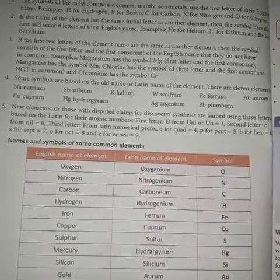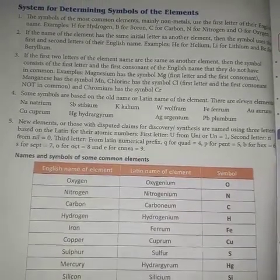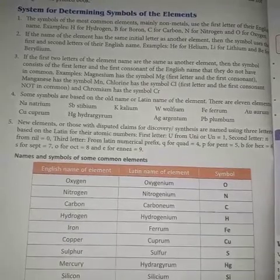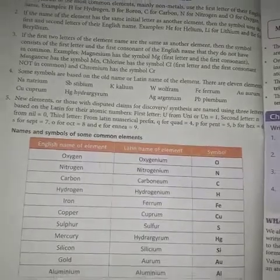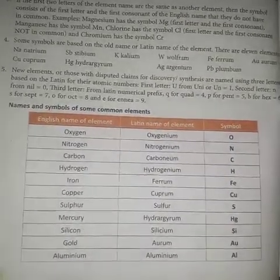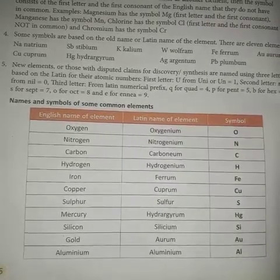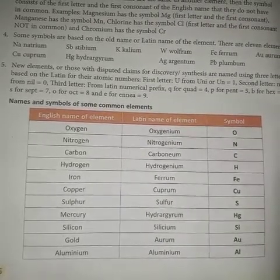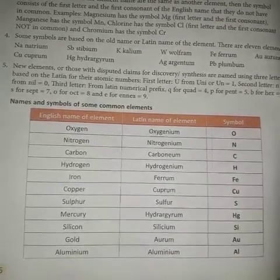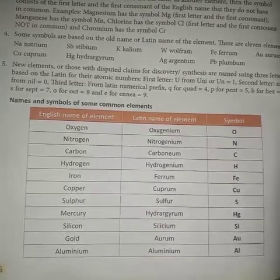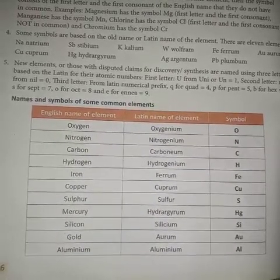These are the five general points for the determination of the symbols of elements. Here are the names and symbols of some common elements: oxygen, nitrogen, carbon, hydrogen, iron, copper, sulfur, mercury, silicon, gold, and aluminum.